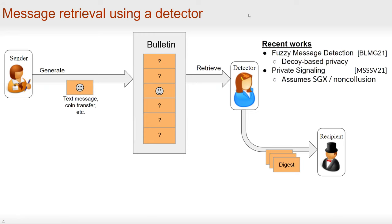There have been two recent works. The first one is for message detection and provides decoy-based privacy. Therefore, it has a relatively weak privacy guarantee, and the computation and communication cost are both dependent on the privacy it provides. The second work is called private signaling and has two constructions, but both have slightly strong environmental assumptions: the first assumes trusted hardware like Intel SGX, and the second assumes two communicating but non-colluding servers.